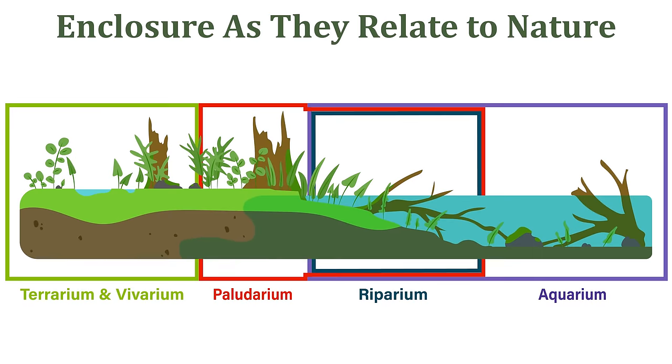The terrarium and vivarium would be located in fully terrestrial areas. Occasional water pockets may be present, but they're away from anything significant. Moving closer and into the transitional riparian zones between land and water is where the paludarium would reside. While the riparium is represented beyond the water's edge in the shallows full of marginal plants, and everything beyond would be an aquarium.